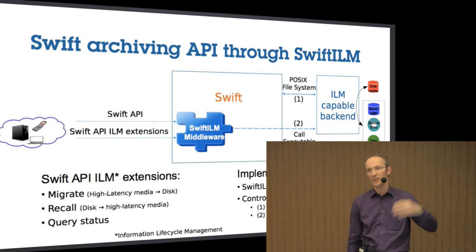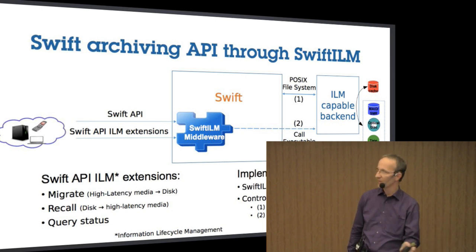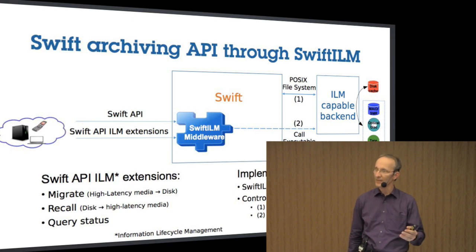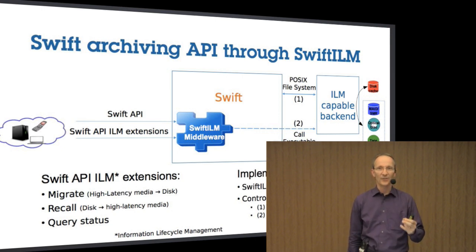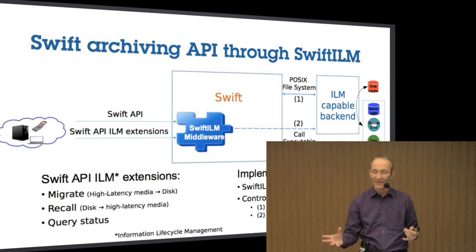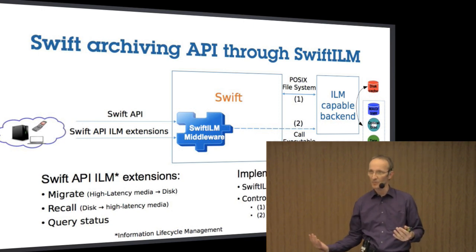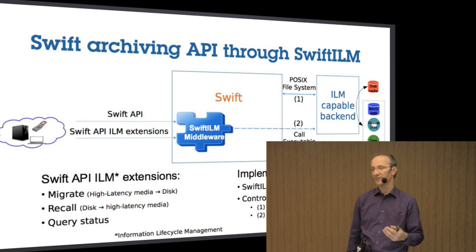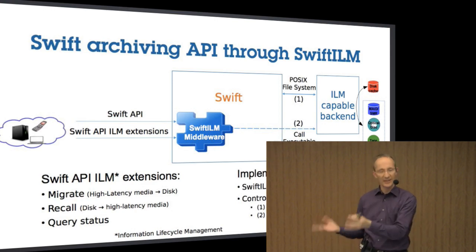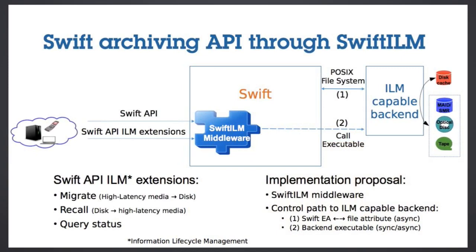The flow is from left to right on the graphic shown. On the left side, we have the client that uses the normal Swift API, but we prototyped a Swift middleware component that ties into Swift and allows three additional operations: migrate, which instructs a backend to actually move data between the disk cache and the high-latency medium; recall, the reverse operation to get data back from the high-latency media; and a status operation to query the progress of these operations, since they would typically be asynchronous. You would kick them off, they would take some time, and then you'd check back to see if the data is already migrated or recalled.